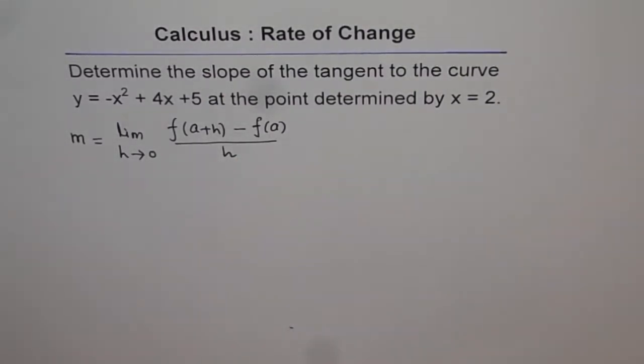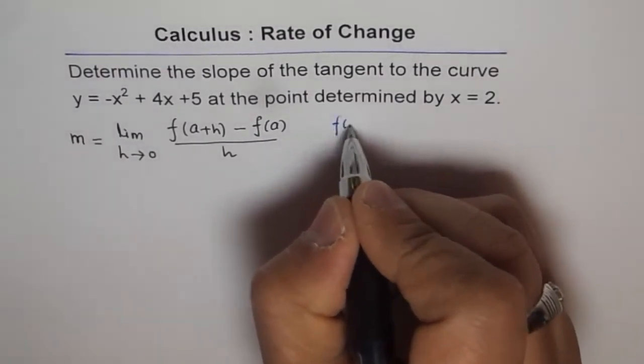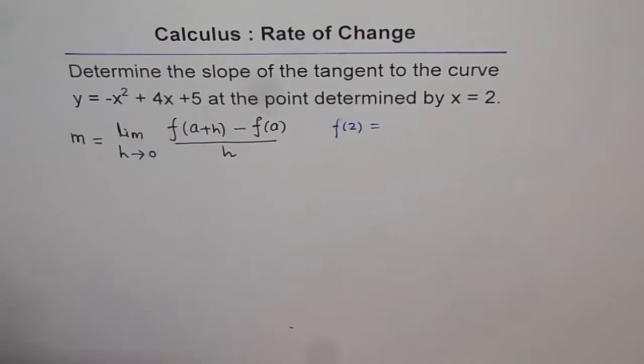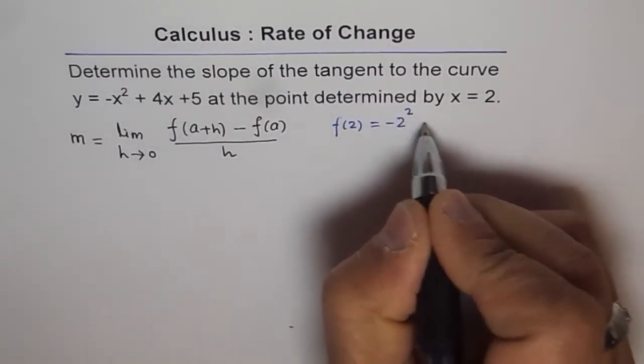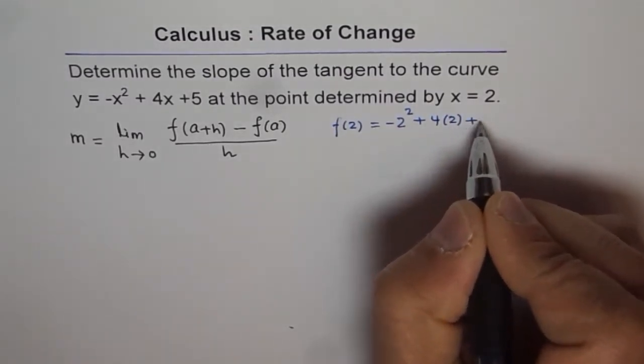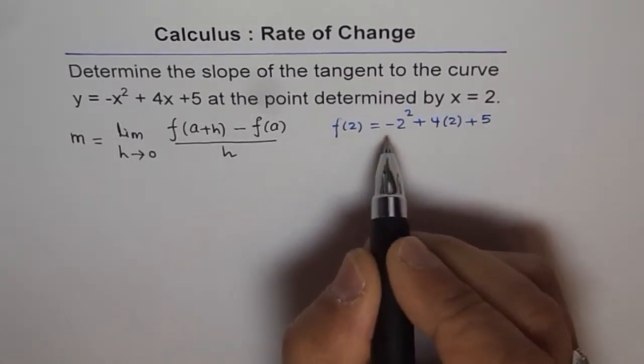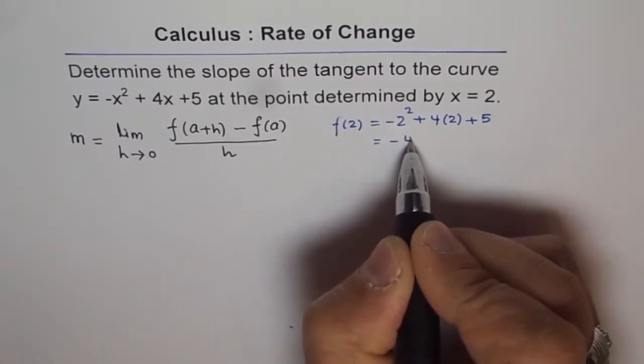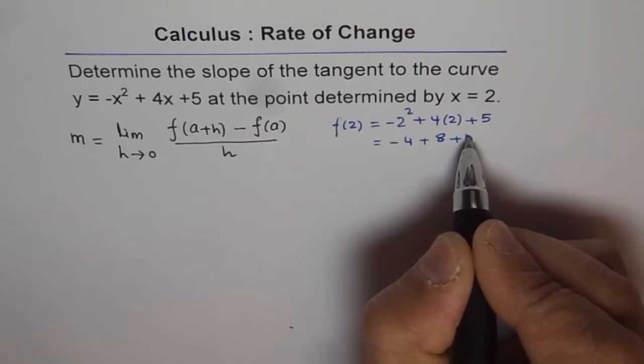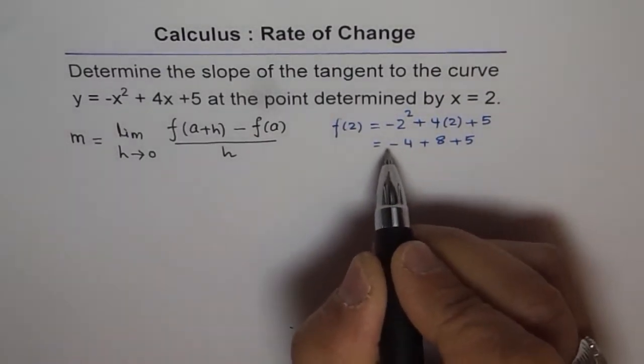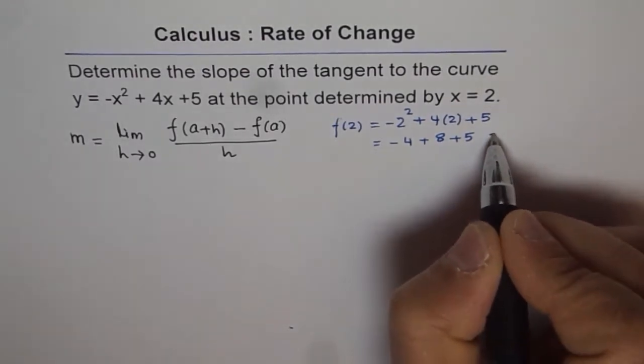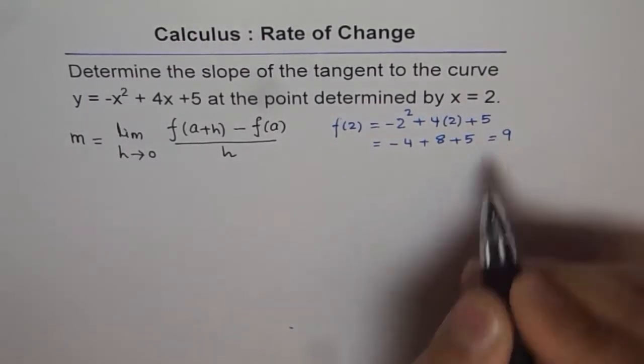We will find f(2) by substituting 2: f(2) = -2² + 4(2) + 5 = -4 + 8 + 5. That means -4 + 8 is 4, and 4 + 5 is 9. So we get f(2) = 9.